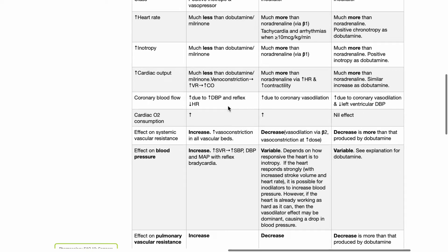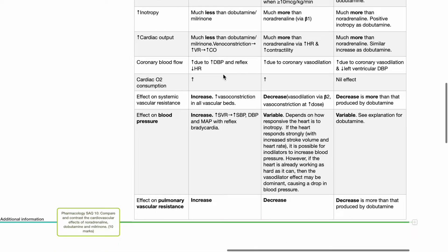Regarding effects on coronary blood flow: noradrenaline increases coronary blood flow due to increased diastolic blood pressure and reflex bradycardia, which increases diastolic time. Dobutamine increases coronary blood flow via coronary vasodilation. Milrinone also increases coronary blood flow via coronary vasodilation and reduced left ventricular diastolic pressure. Noradrenaline and dobutamine increase cardiac oxygen consumption, while milrinone does not affect cardiac oxygen consumption.